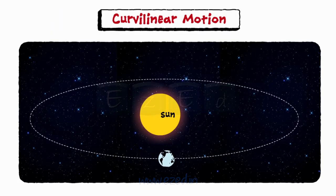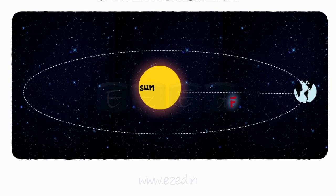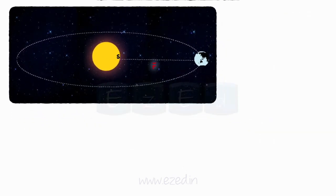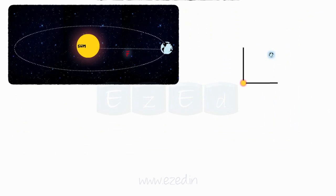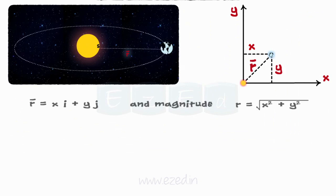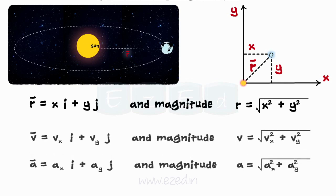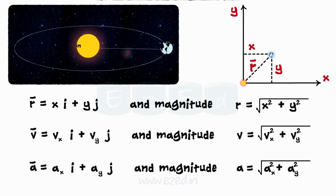In our previous example of the solar system, the planets keep on changing their position. So the position vector is extended from the origin — that is the sun — to the position of the planets. Therefore, we split the position of the planet into two independent rectilinear motions along the x-direction and y-direction, and its position and magnitude can be found out. With the help of the position vector, we can also find its velocity and acceleration.